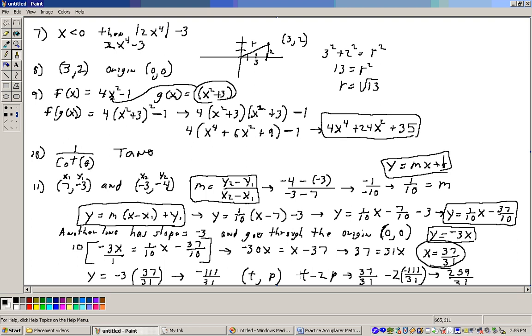Now, the problem lastly says, calculate t minus 2p. So, that would be t, which is 37/31, minus 2 times p, and p is this minus 111/31. So, just doing this last bit here, minus 2 times this minus 111 is positive 222, plus the 37 makes 259/31. And that's the answer to this problem. And it is approximately 8.35. And I'll pick it up with the next problem on the next video.